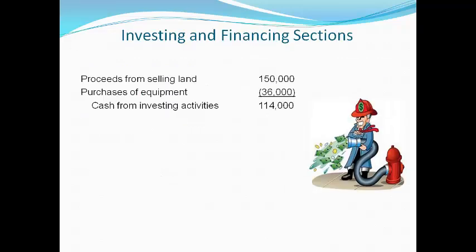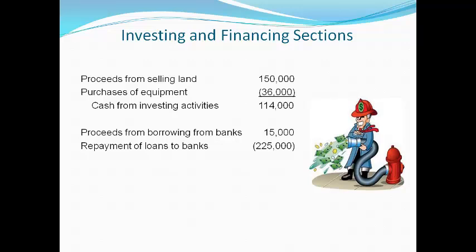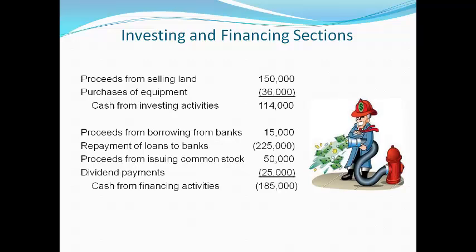The investing and financing sections are done the same for both the indirect and direct methods. All amounts represent cash paid or received, so there is no need for computations or reconciliations. The investing section reports purchases and sales of long-term assets like property, plant and equipment, intangible assets, or securities investments. The financing section reports cash received from borrowing and cash paid for repaying loans from banks, as well as cash paid to or received from owners such as issuing stock or paying dividends. All numbers in these sections represent the cash amount paid or received.